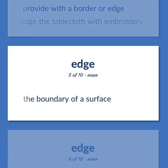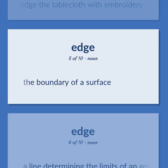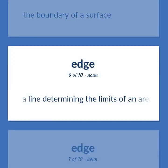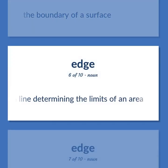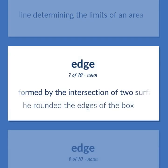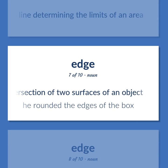The boundary of a surface. A line determining the limits of an area. A sharp side formed by the intersection of two surfaces of an object. He rounded the edges of the box.